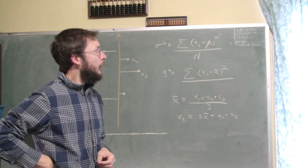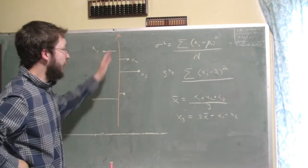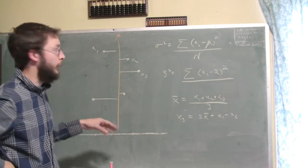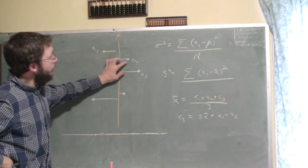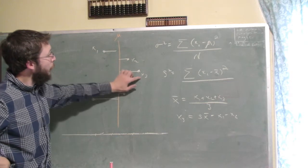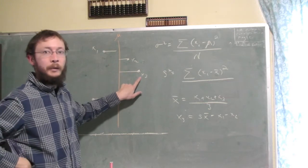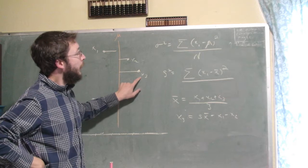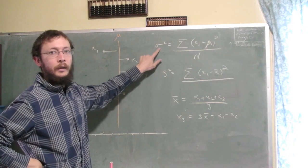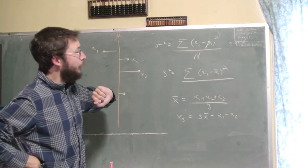And of course we rarely have an entire population, and usually the best we can do is we can get a sample. So let's consider this set of three points, it's a sample taken from our population, and suppose that we want to estimate the population variance, then we would do that obviously with the sample variance.